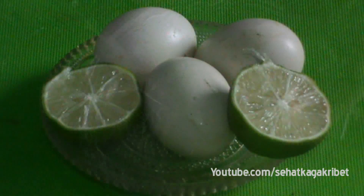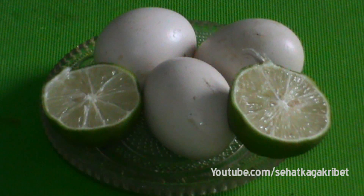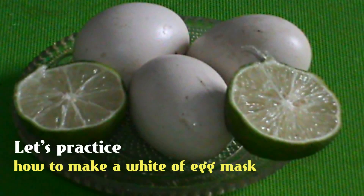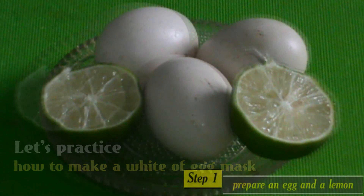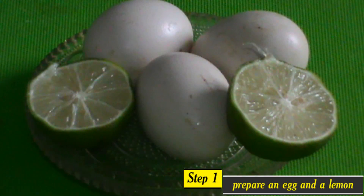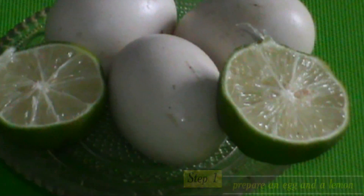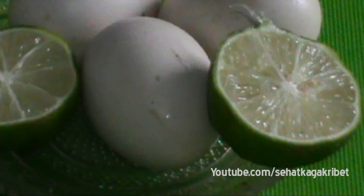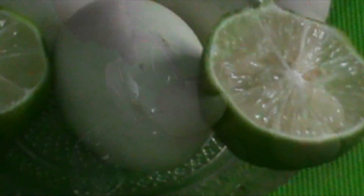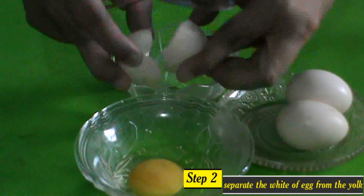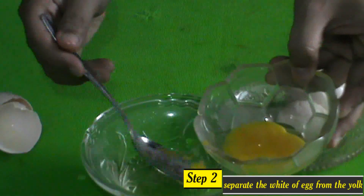Okay, let's practice how to make a white of egg mask. Pay attention well on the following steps. The first step, prepare an egg and a lemon. The second, separate the white of egg from the yolk.